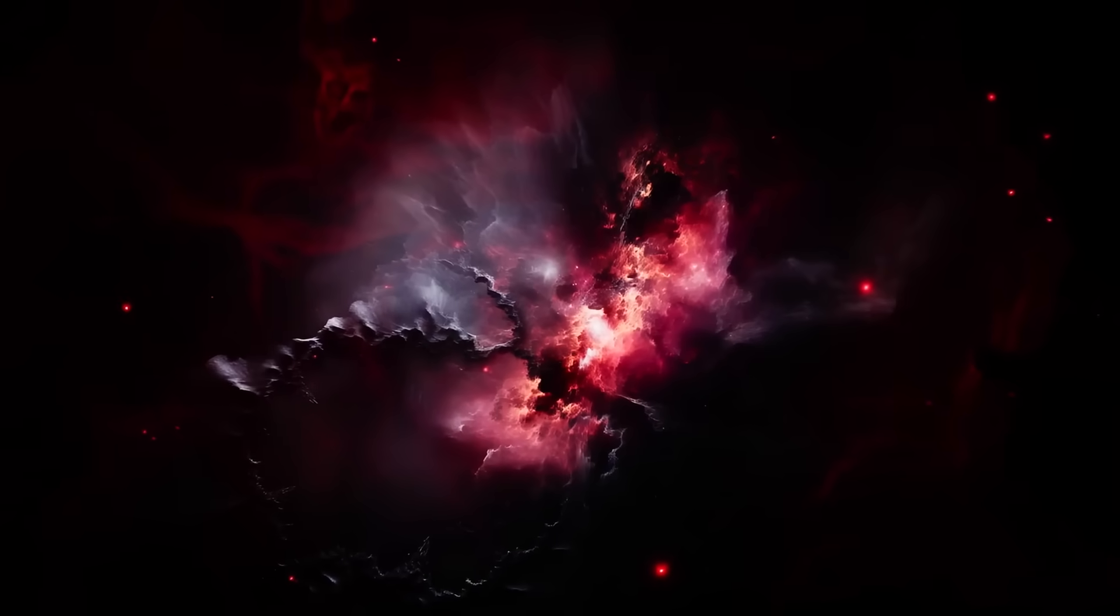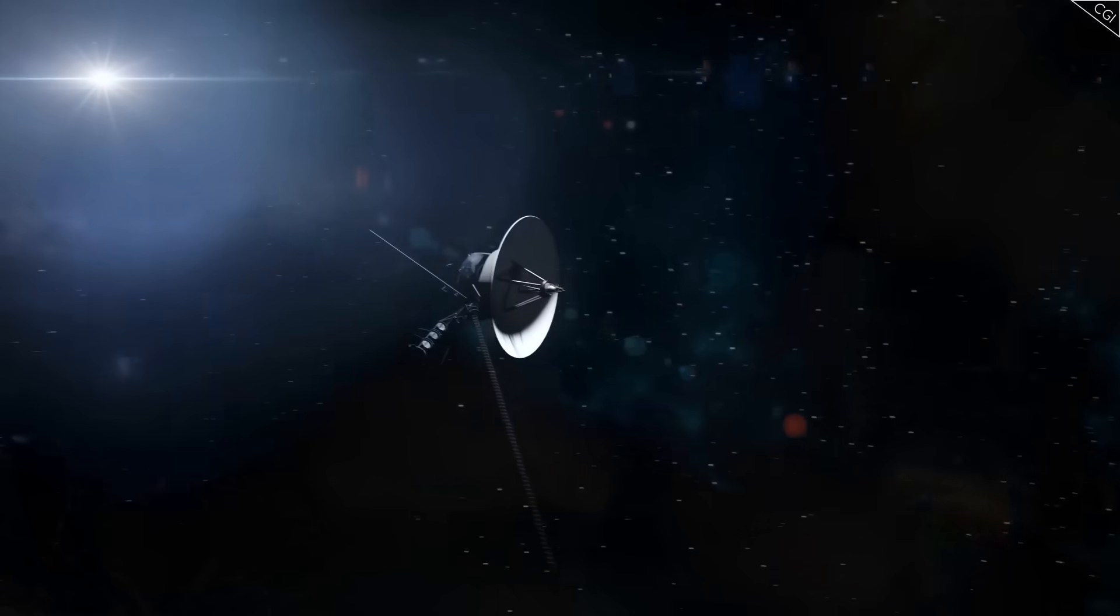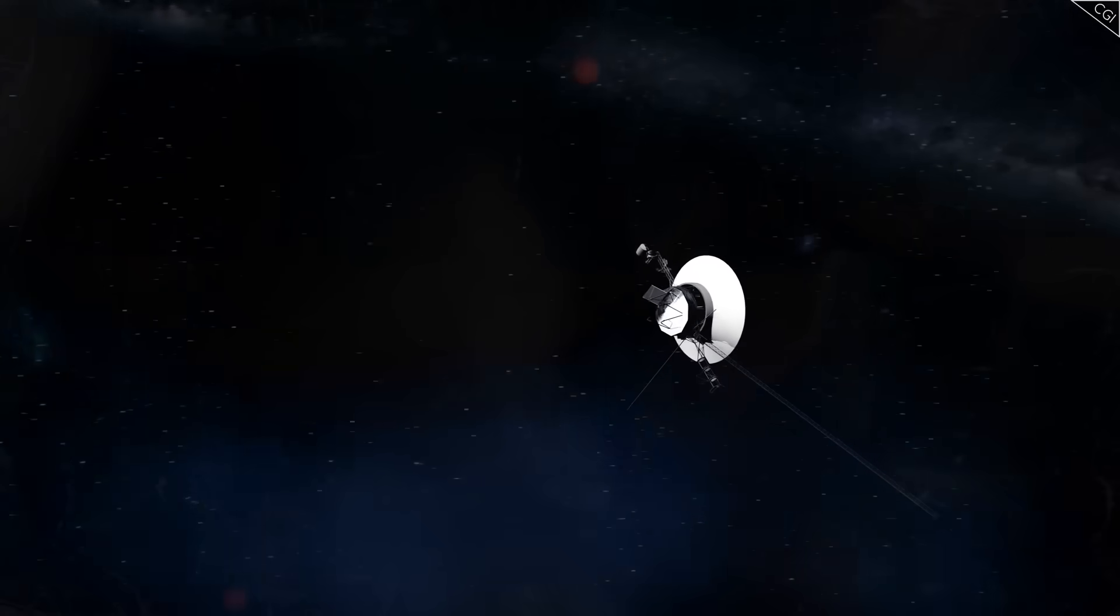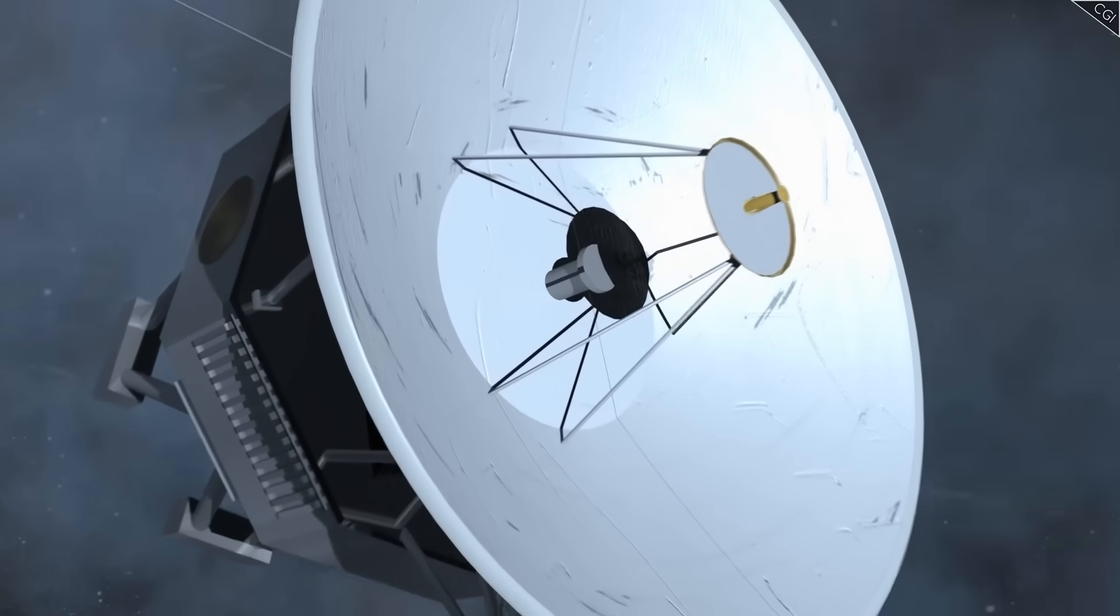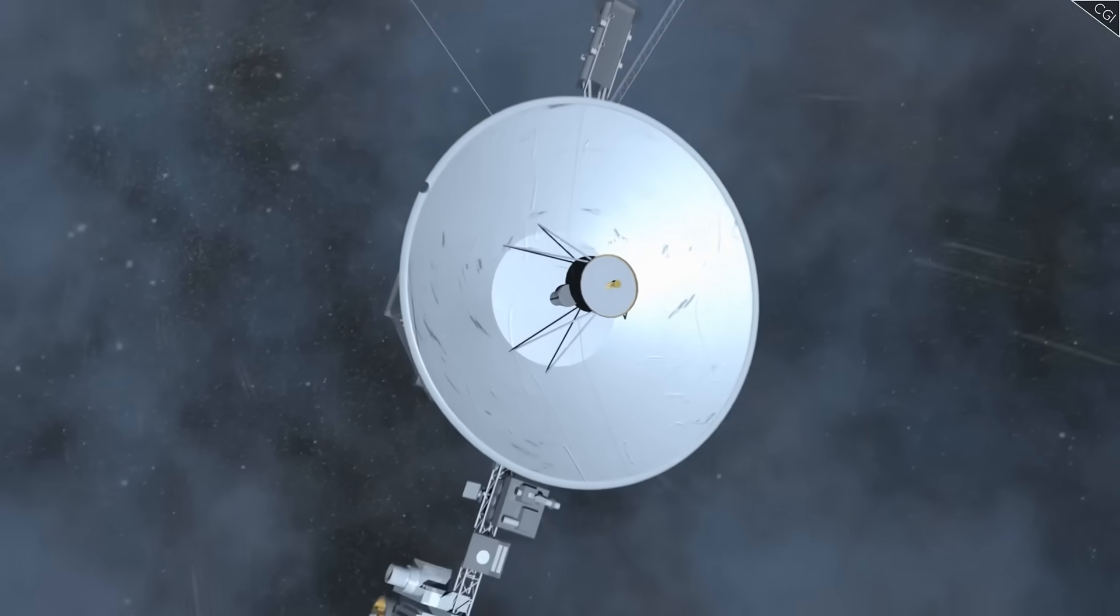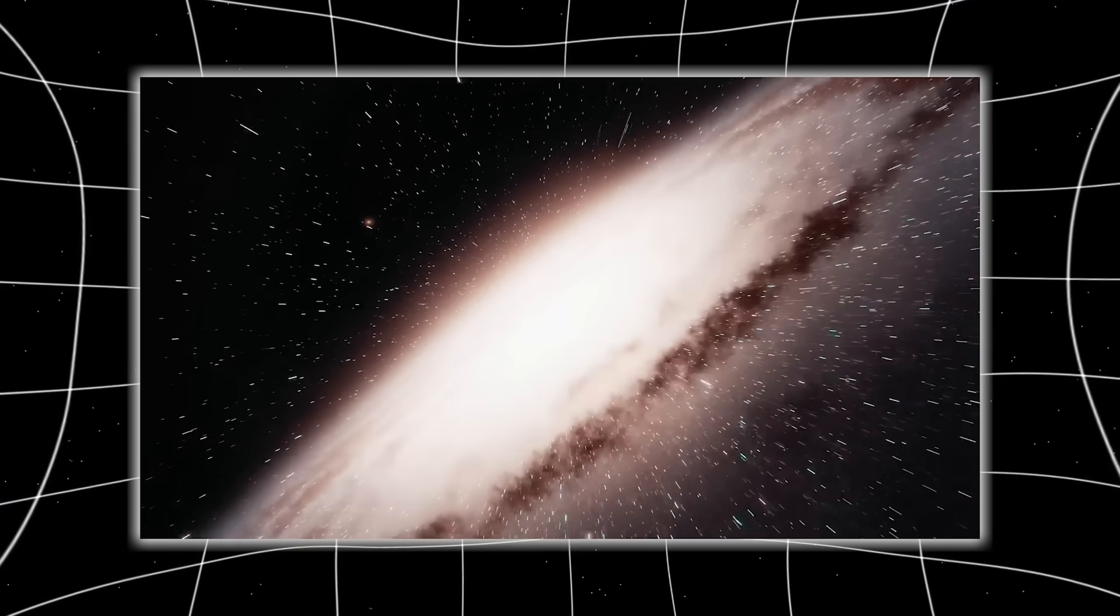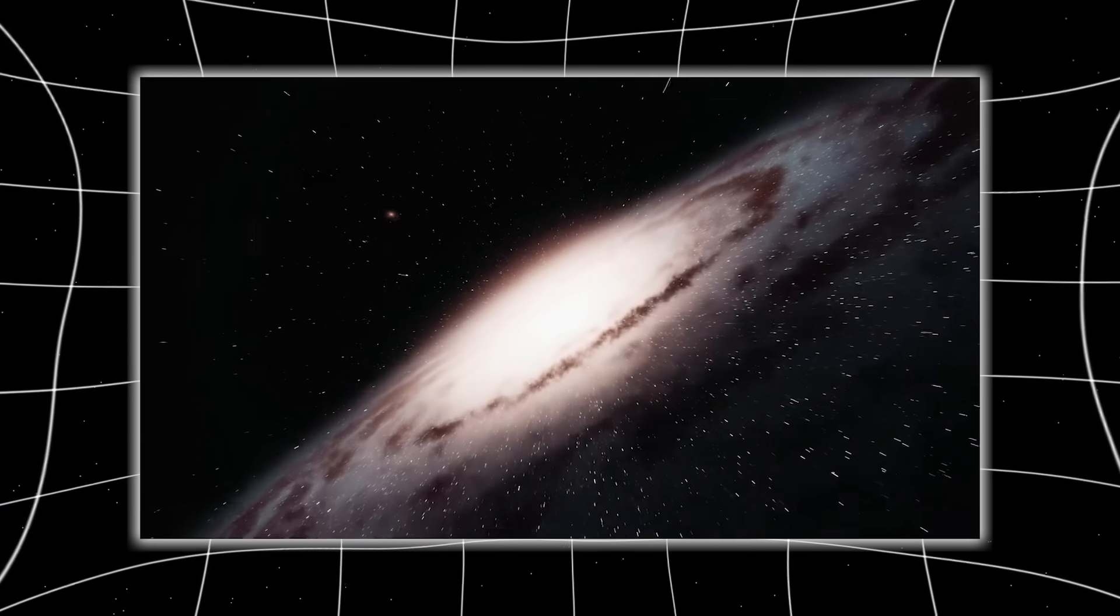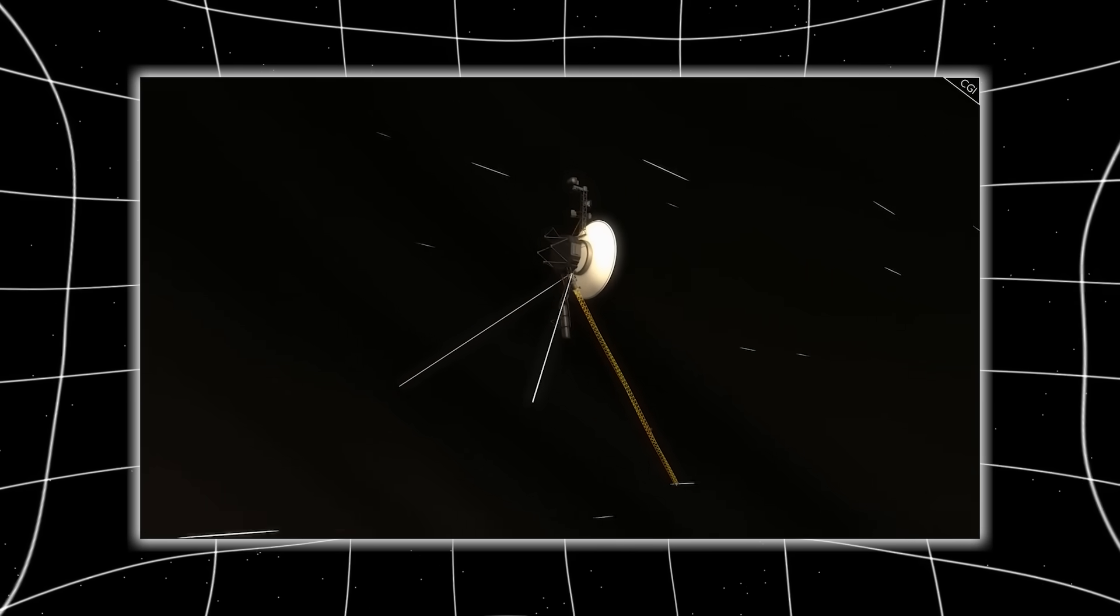Then in 2018, Voyager 2 crossed the same boundary and detected the exact same magnetic alignment, the same density spikes, the same eerie lack of transition. Two spacecraft, six years apart, entering supposedly open space, both finding themselves trapped in identical magnetic conditions. NASA's models couldn't explain it. The simplest conclusion, that the probes hadn't actually left the sun's influence, raised an even bigger question.